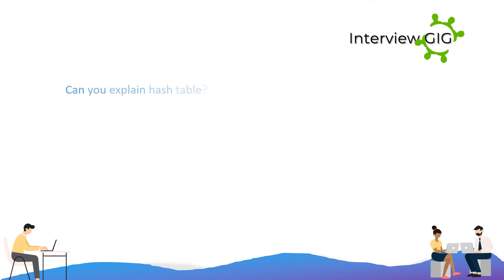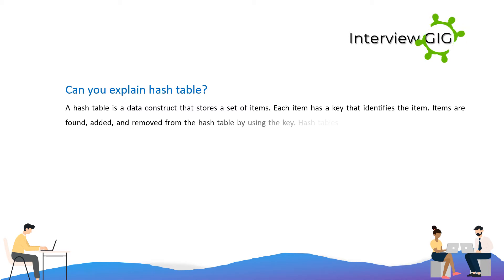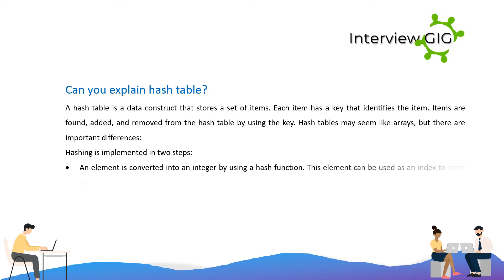Can you explain a hash table? A hash table is a data construct that stores a set of items. Each item has a key that identifies it. Items are found, added, and removed from the hash table by using the key. Hash tables may seem like arrays, but there are important differences. Hashing is implemented in two steps: an element is converted into an integer by using a hash function, and this element can be used as an index to store the original element, which falls into the hash table.